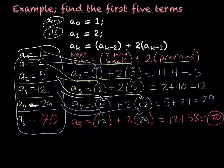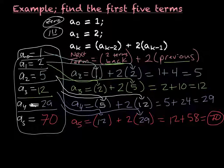So my final answer is: A sub 0 equals 1, A sub 1 equals 2, A sub 2 equals 5, A sub 3 equals 12, A sub 4 equals 29, and A sub 5 equals 70. There are a few more examples on recursive formulas to help clear things up. Go through some more practice problems, come up with your own, and then you should be ready for the quiz over this material.